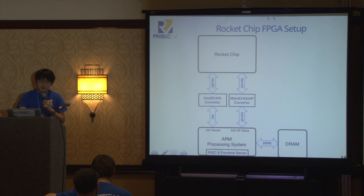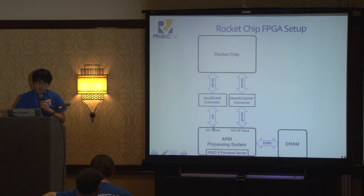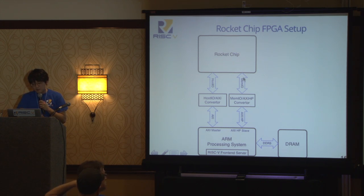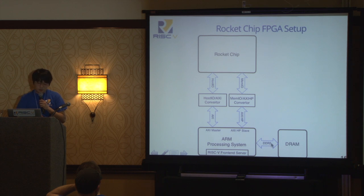For the FPGA setup, we extensively use the Zynq FPGA, which has an ARM core that eases development of Ethernet and memory IP. We build a host-IO to AXI converter connected to an AXI master port on the ARM core, and a mem-IO to AXI high-performance converter connected to a slave port. The front-end server runs on the ARM processor on the Zynq. The front-end server downloads the program through this interface, which comes out of the mem-IO and talks to the DDR3 memory.